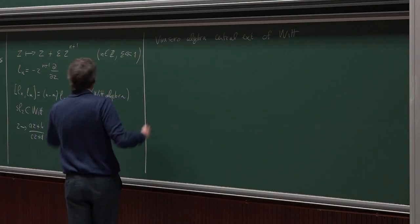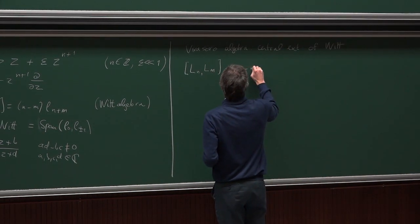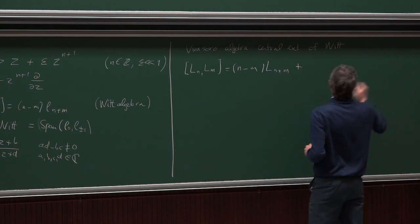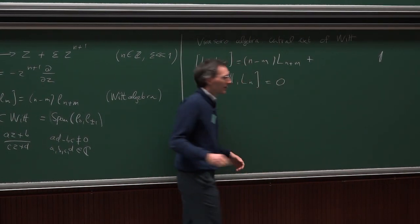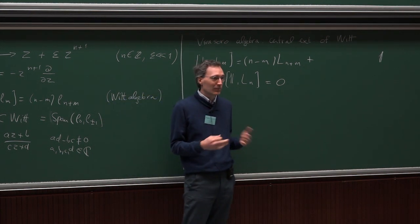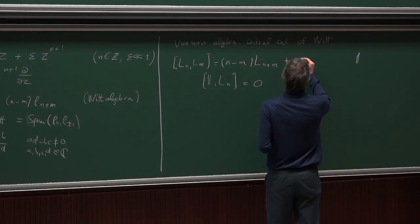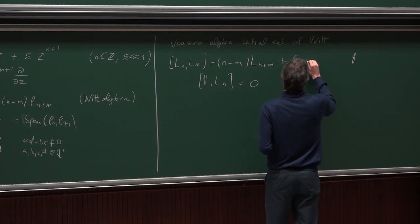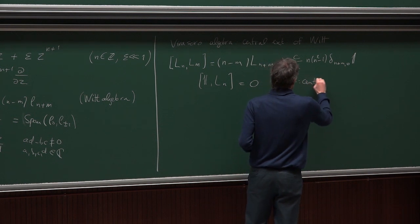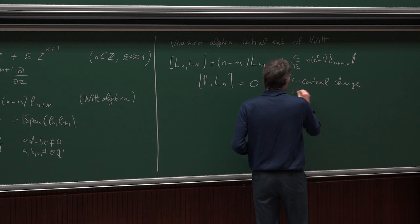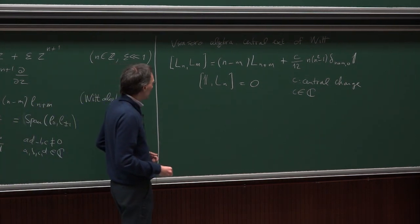The commutation relations of the Virasoro algebra are the same as the Witt algebra plus a central term. The generators are now called big L, and the central term takes the form (c/12)(n²−1) δ_{n+m, 0}, where c is the central charge. The central generator 1 commutes with everything and has a constant value in any given conformal field theory. c is a complex number; the 12 is a normalization coefficient.